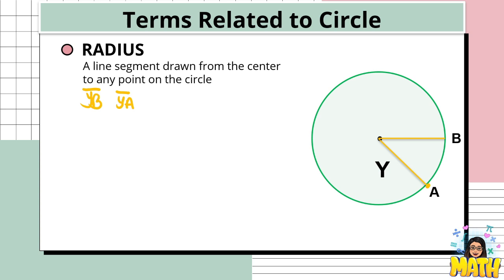Notice that the radius also emphasizes the distance of all the points of the circle from the center. So if a radius has a measure of 5 inches, another radius must also measure 5 inches, because by the definition of a circle, all of the points on the circle are equidistant from its center.